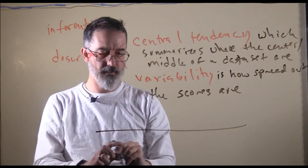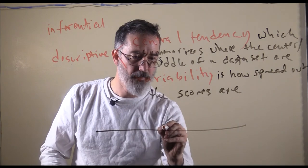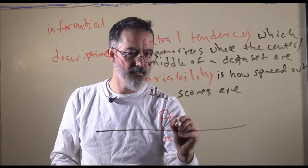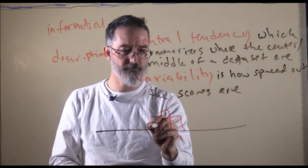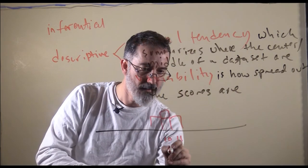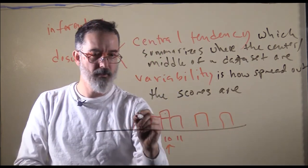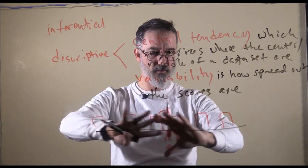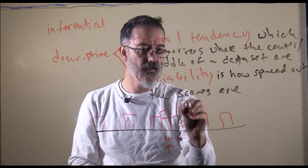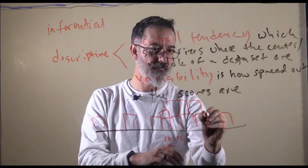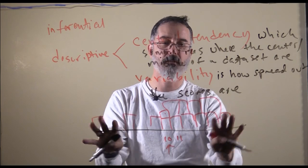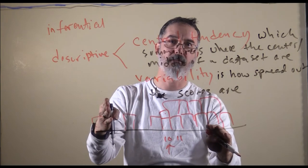Generally, if there are two people with values of 10 and 11 — all really close to each other — there is not very much variability, and their center is right around there. But if we add more people, the scores are more spread out, so there is more variability, although the center is still in the same place. If we add a lot of scores over here, now the center shifts, and we have a bit of variability still. This illustrates central tendency and variability.